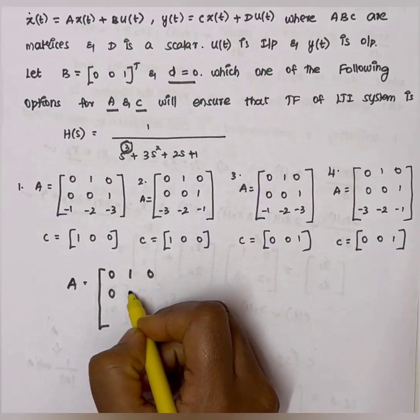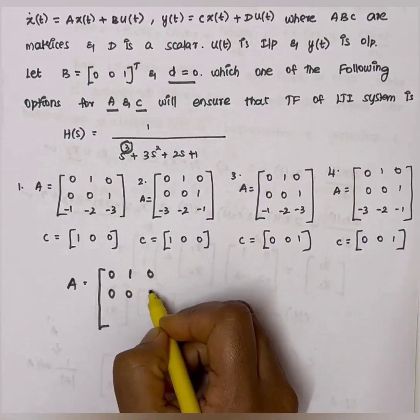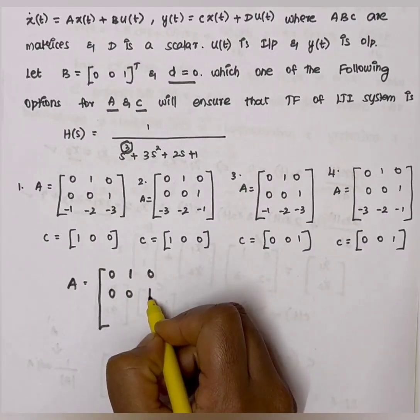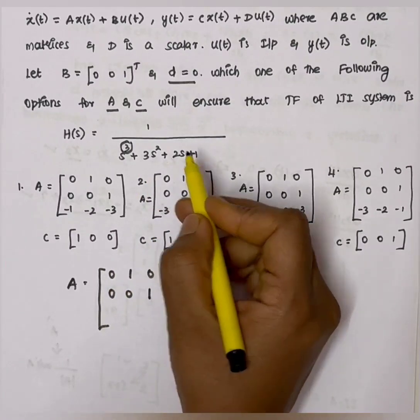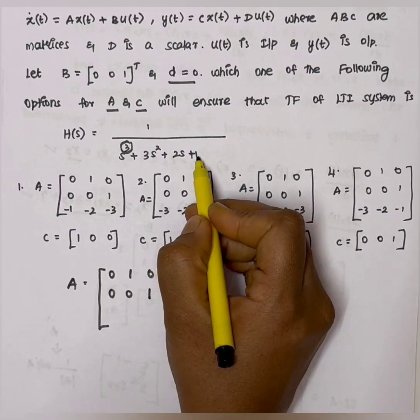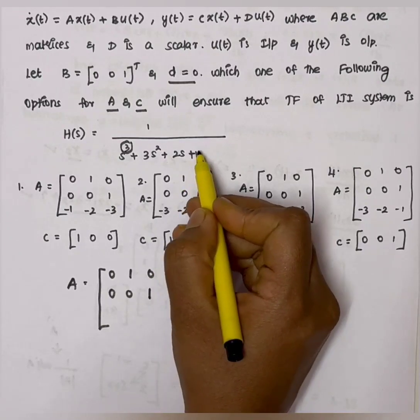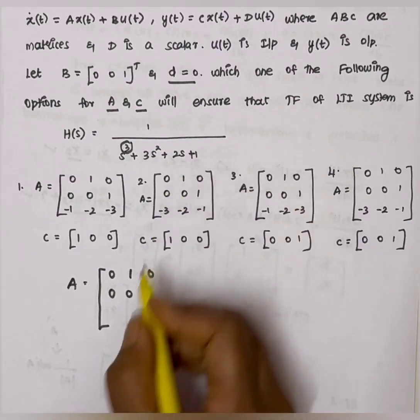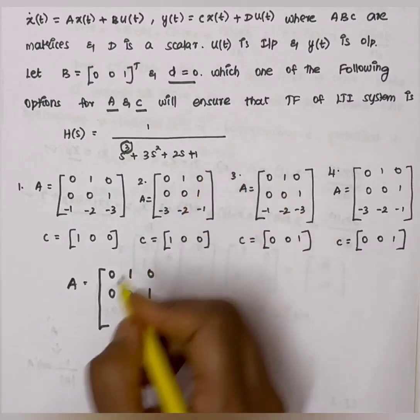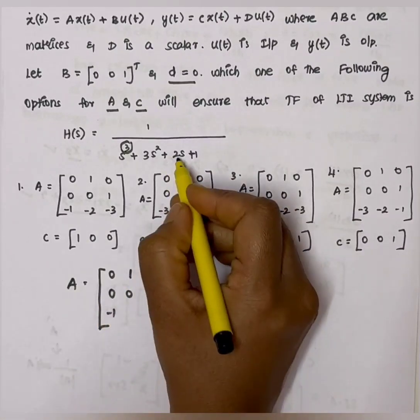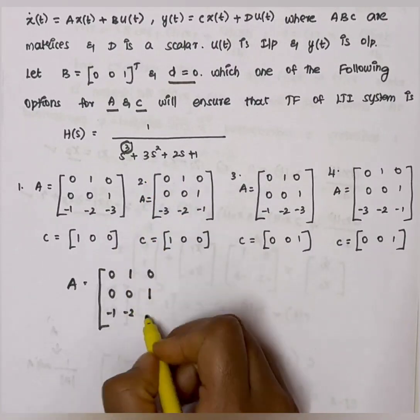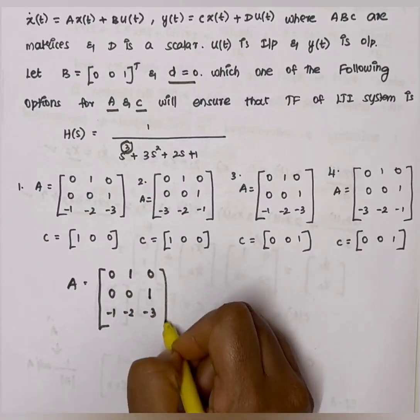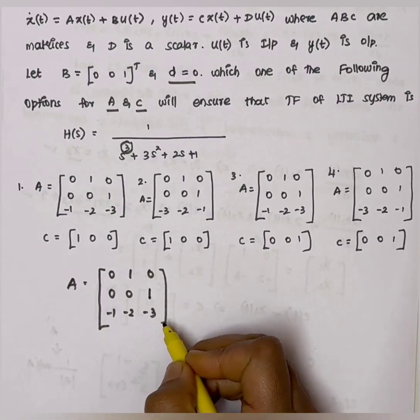So 0, 0, this diagonal shift will be 1. For the third row, we consider the denominator. Start with the constant term and change the sign. So first 1 becomes minus 1, second coefficient 2 becomes minus 2, and 3 becomes minus 3. So this is the A matrix.